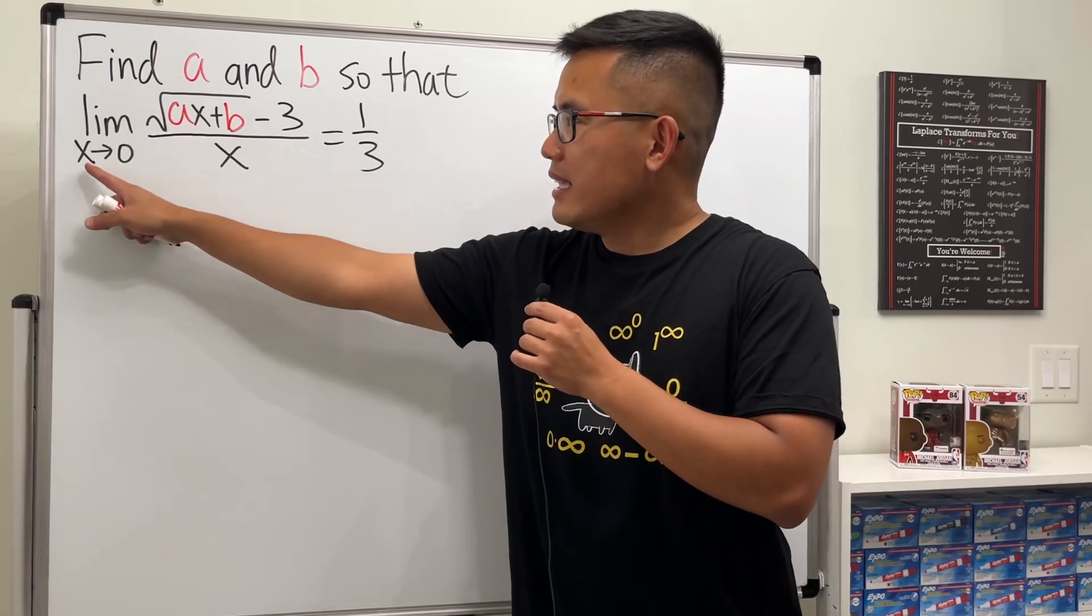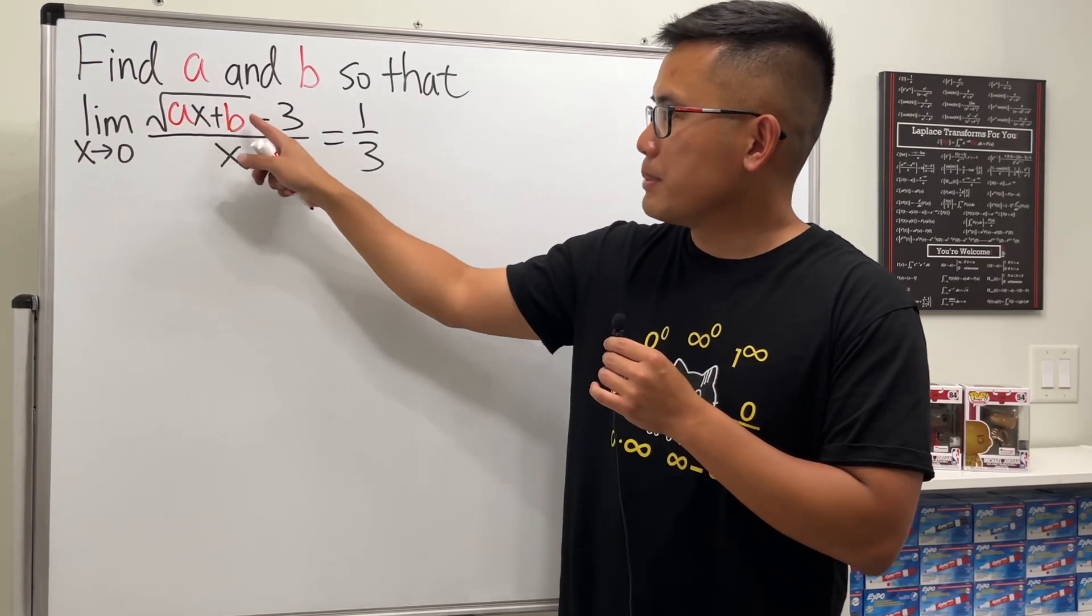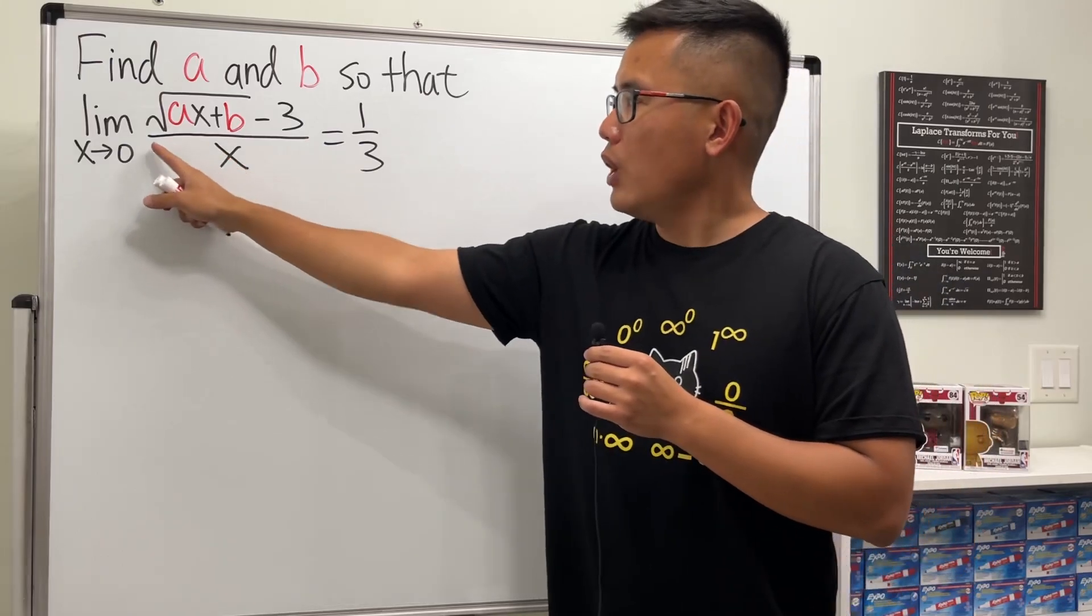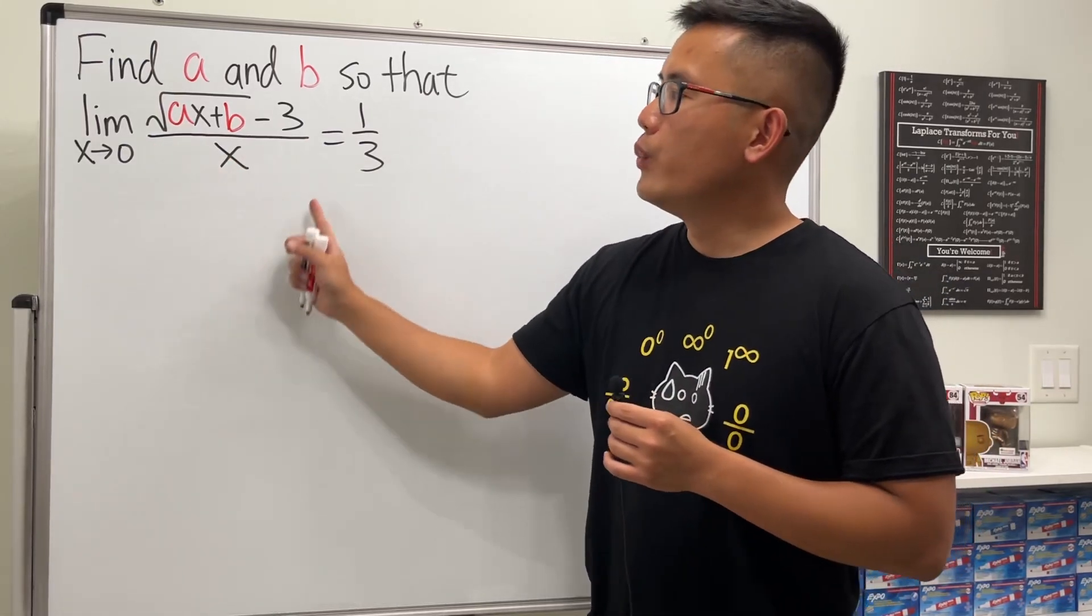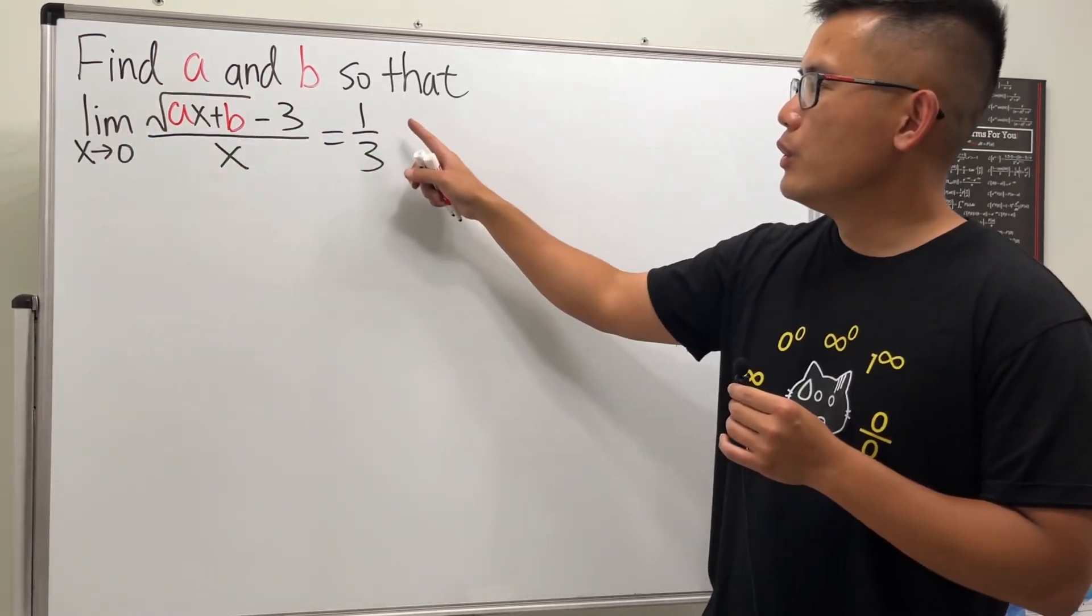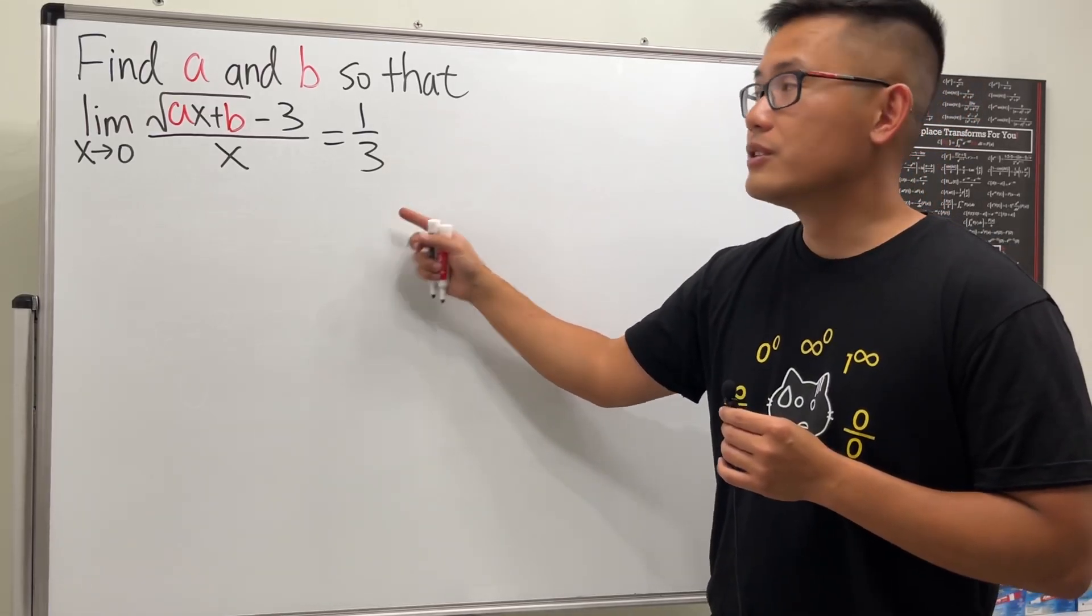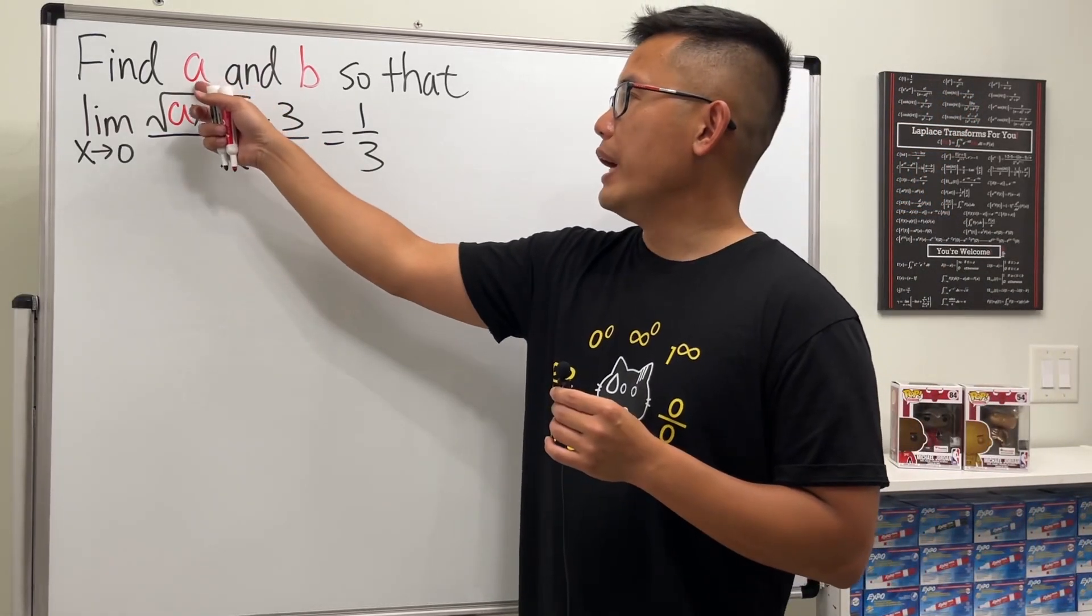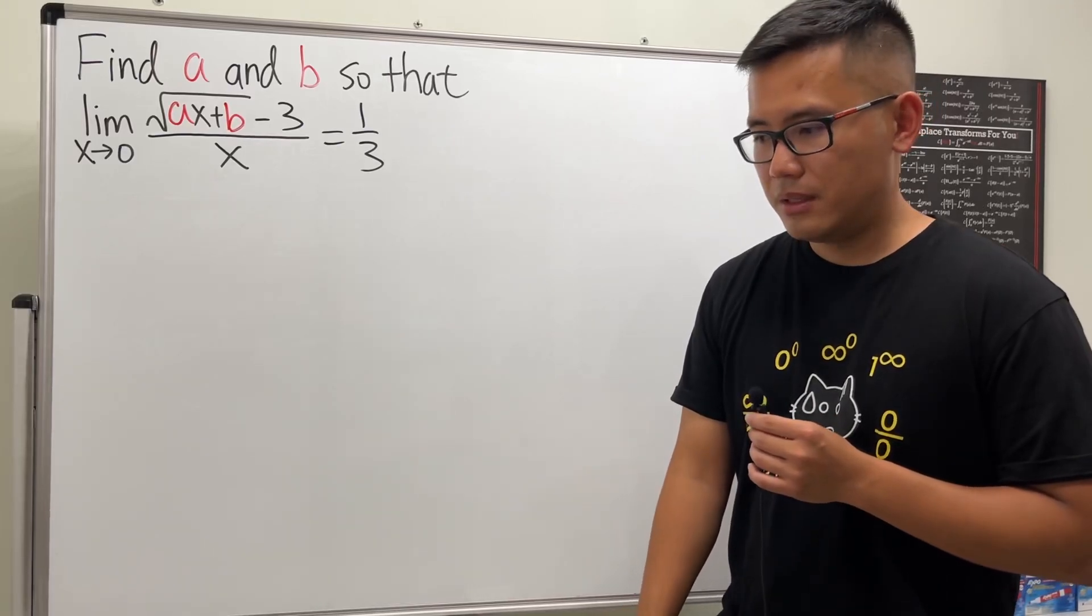We want the limit as x approaching zero, and here we have square root of ax plus b minus 3, over x. We want this to be 1 over 3. So the question is, what should a and b be? You know the deal—please pause the video and try this first.